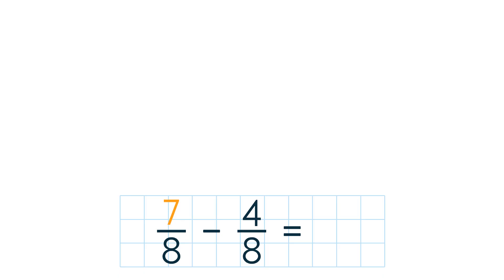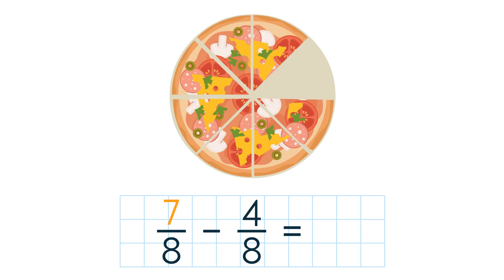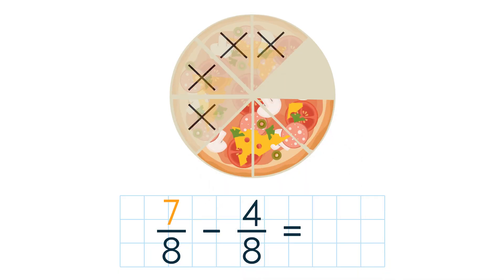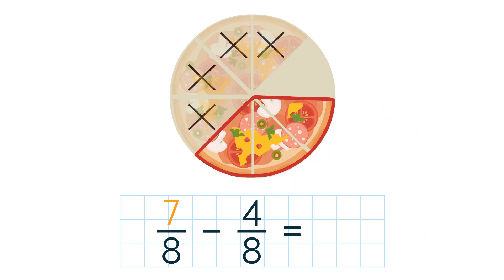Let's solve the problem using a model. Imagine you had 7 slices of pizza, and somebody ate 4 slices. Now we have 3 out of 8 slices left. So the answer is 3 eighths.